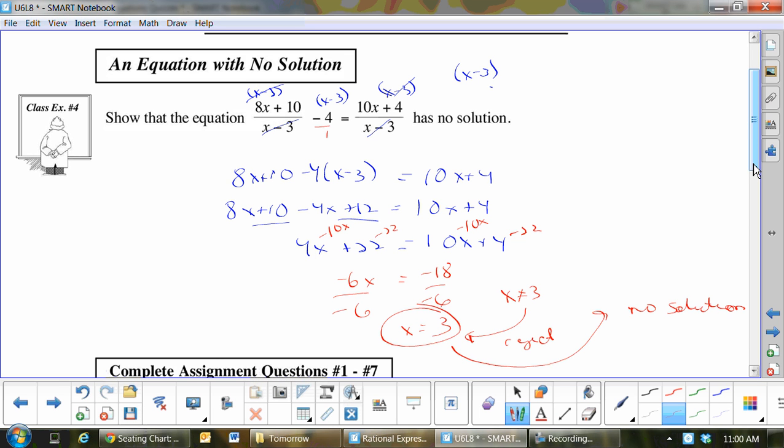So these are good written response questions. I give something like this, you've got to do all the work. You've got to show me that x cannot equal 3, because it's a non-permissible. But first you've got to show me x equals 3, then x cannot equal 3 because of the non-permissible. Therefore there's no solution. Get it?